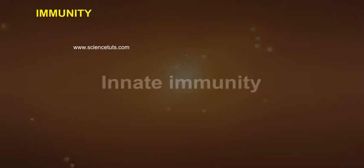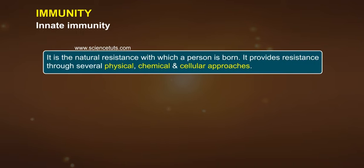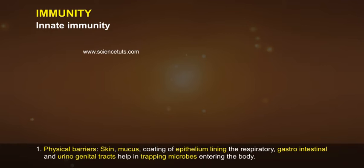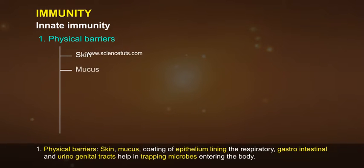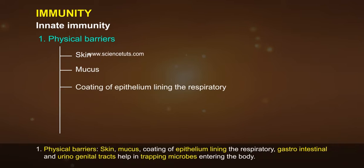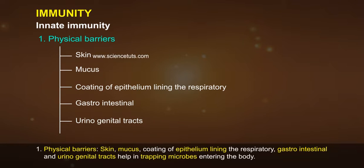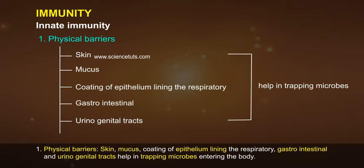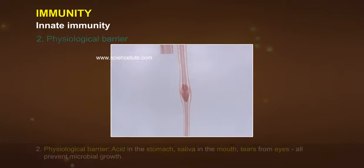Innate immunity is the natural resistance with which a person is born. It provides resistance through several physical, chemical, and cellular approaches. 1. Physical barriers: Skin, mucus, and coating of epithelium lining the respiratory, gastrointestinal, and urinogenital tracts help in trapping microbes entering the body.